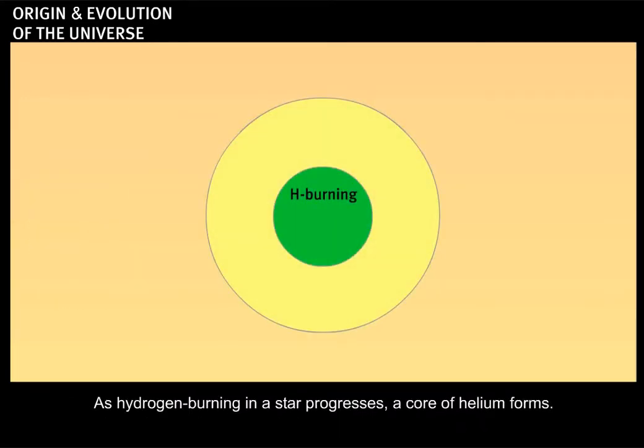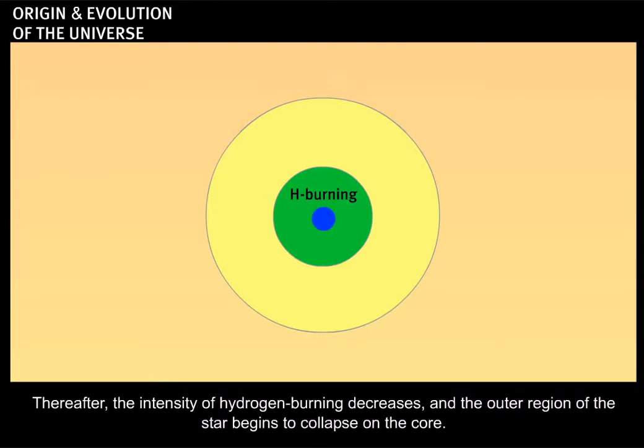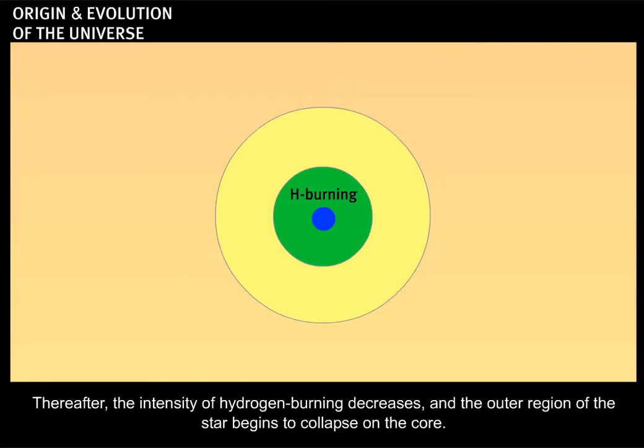As hydrogen burning in a star progresses, a core of helium forms. Therefore, the intensity of hydrogen burning decreases and the outer region of the star begins to collapse on the core.